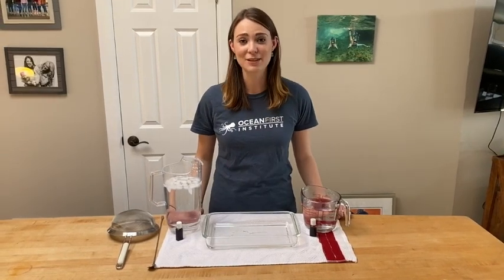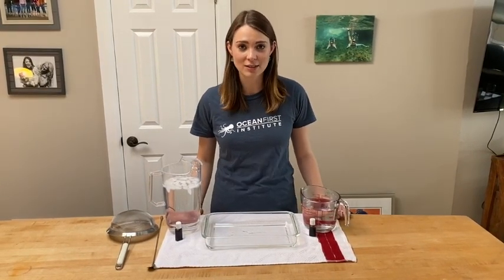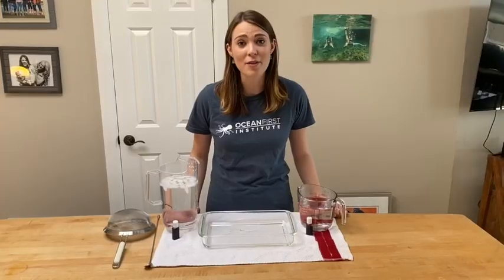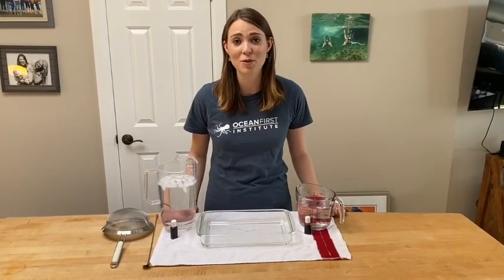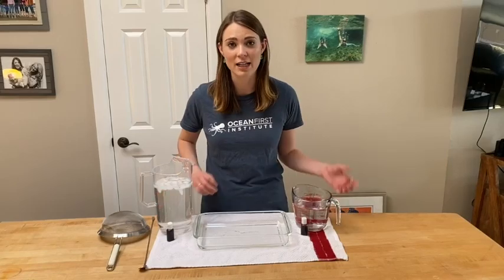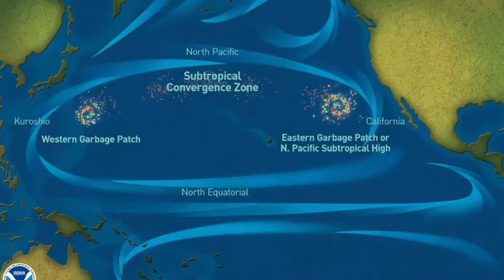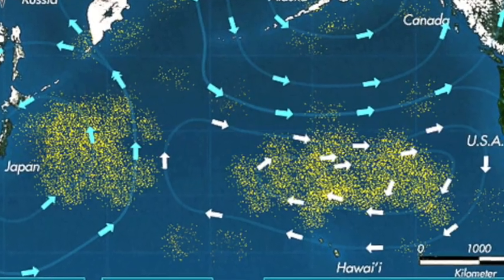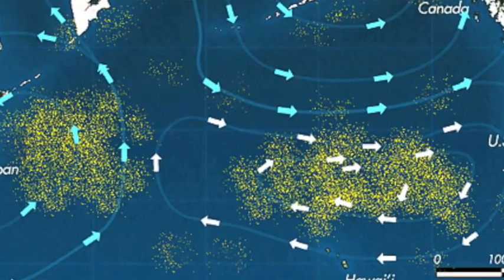In today's activity, we're going to be learning about the formation of ocean currents. Currents are incredibly important — they control weather patterns around the world and can carry things across different oceans. Scientists like to understand them because, among other things, they can help us see why certain areas like the North Pacific Trash Vortex can form and help us cut down on pollution in our oceans.